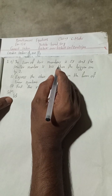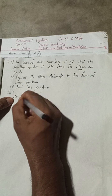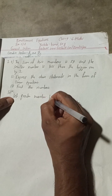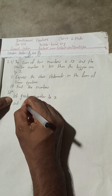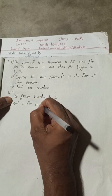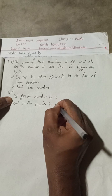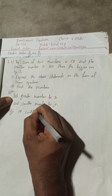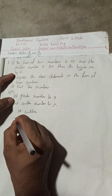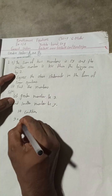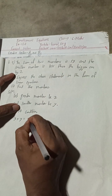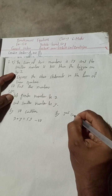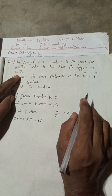Let one number be x and the other number be y. Or we can suppose: let the greater number be x and the smaller number be y. By the first condition, the sum of two numbers is x plus y equals 59. This is our equation 1.